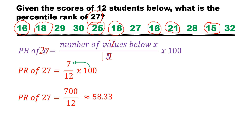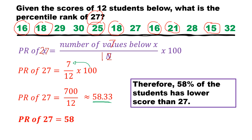Since we're talking about percentile rank, we need a whole number. Rounding 58.33 to a whole number, the percentile rank of 27 is 58. This simply means that 58% of the students have a lower score than 27. That's how simple we determine the percentile rank.